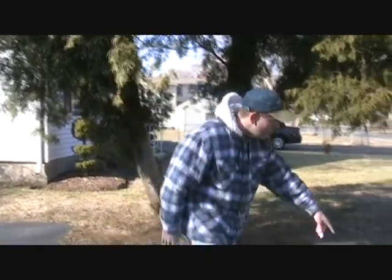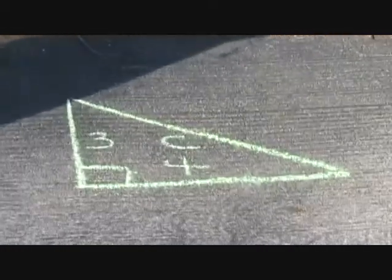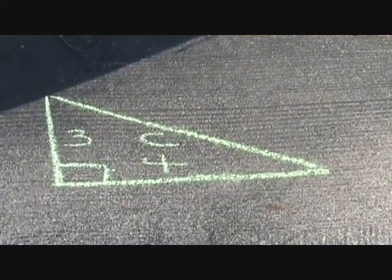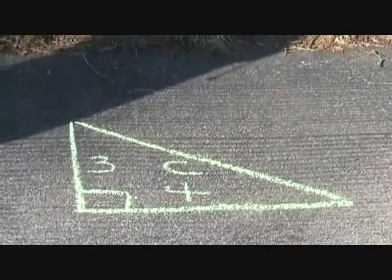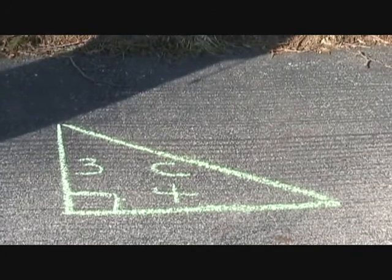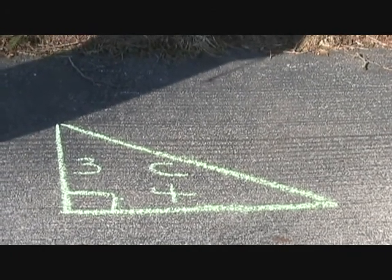Hey, kids. This is Mr. Mitchell here with Sidewalk Mathematics, and this will be an introduction to the Pythagorean Theorem. With the Pythagorean Theorem, we start with a right triangle. In this case, we know the two legs, side length 3 and 4, and we want to find the length of the hypotenuse.